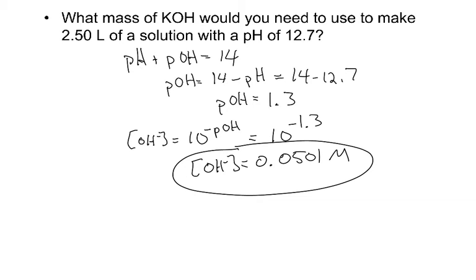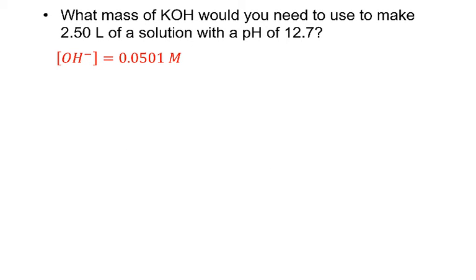And we said, because I have a 1 to 1 ratio, if this is the hydroxide ion concentration, then this will also be the KOH concentration. So if that's the hydroxide, then I also know that was my starting KOH concentration.